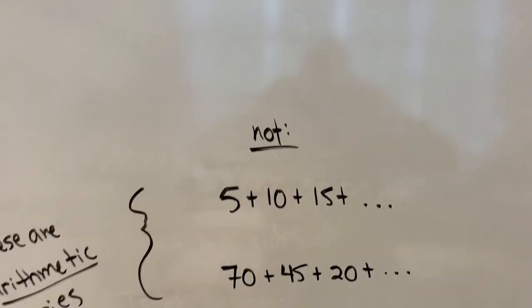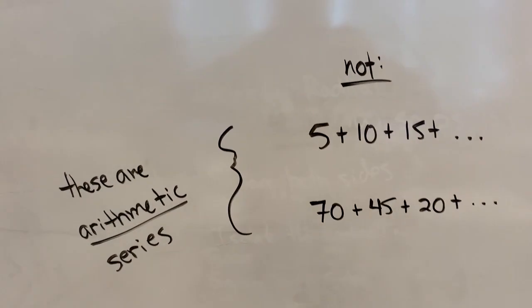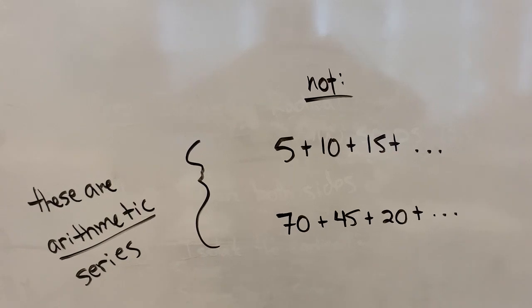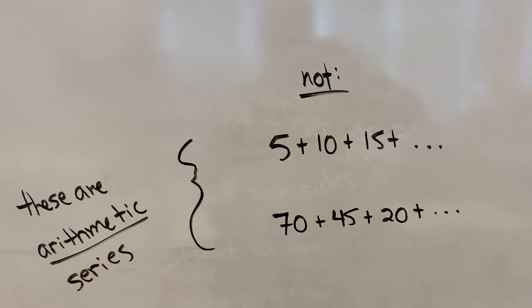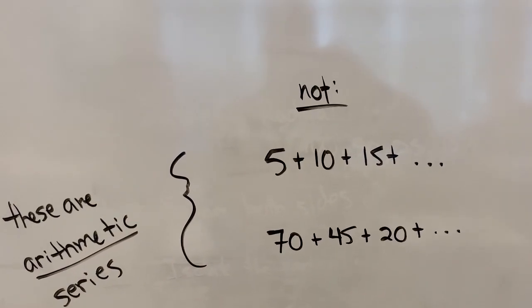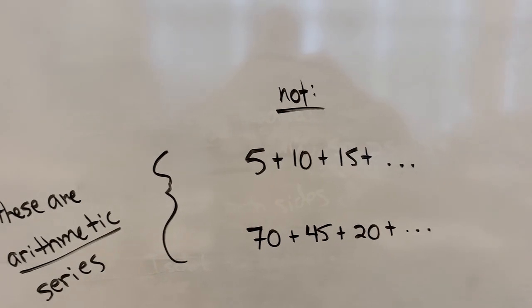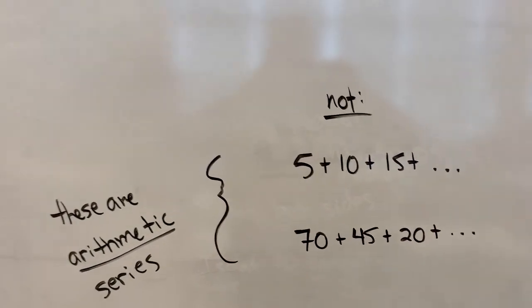Things that we've seen before but that don't fit this category would be arithmetic series. So something that adds 5 or subtracts 25 every time clearly doesn't have a common ratio, so we couldn't fit those under this category.